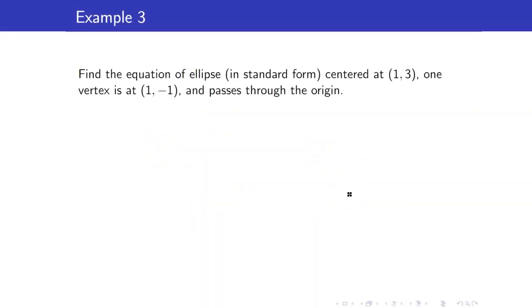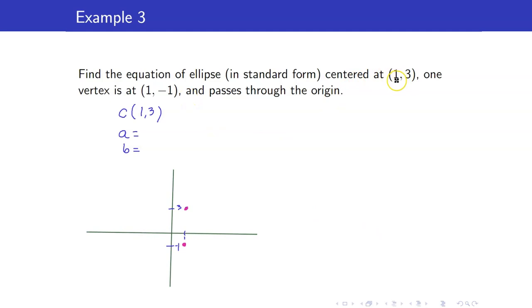Next, let's find the equation of an ellipse centered at (1, 3), with vertex at (1, −1), that passes through the origin. We want to find a and b. Drawing what is given: center (1, 3) and vertex (1, −1). We can get a as the distance from vertex to center: 3 minus (−1) = 4, so a = 4.